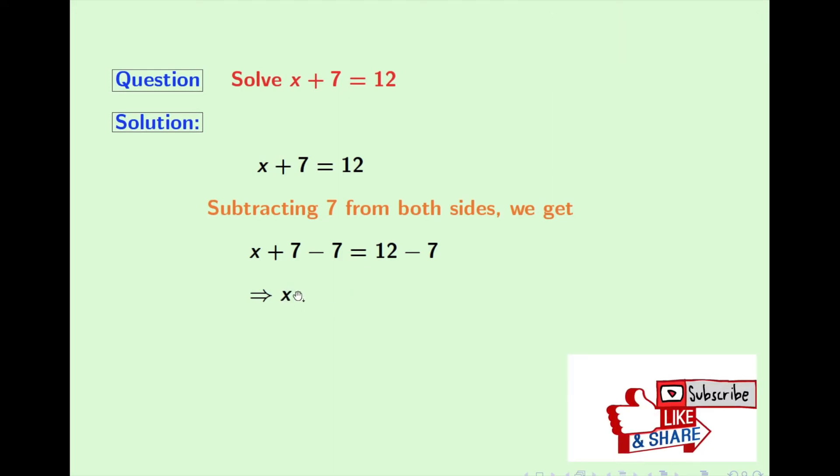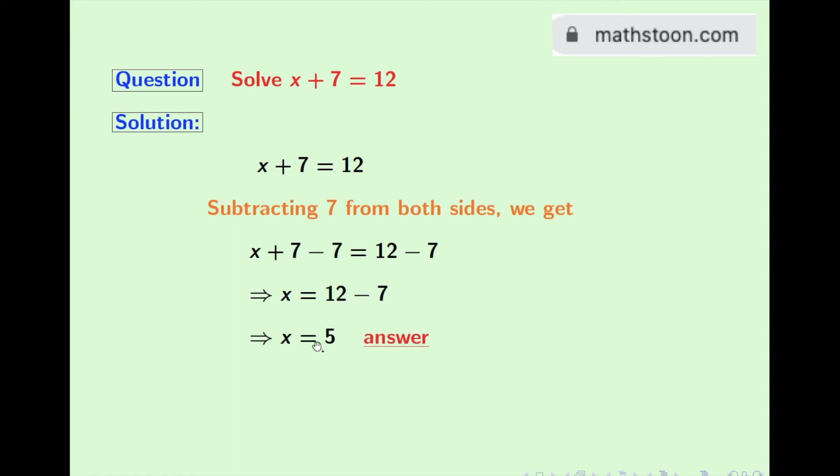And in the right hand side, we have 12 minus 7, which is 5. So finally, we have x is equal to 5, and this comes out as our final answer.